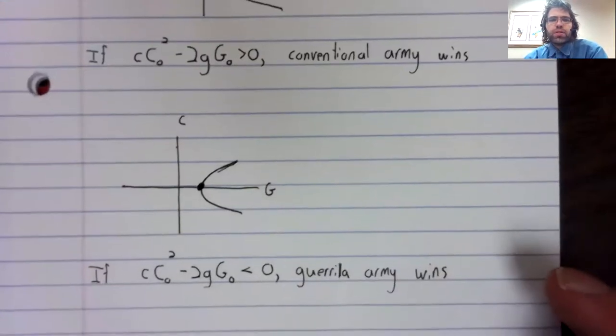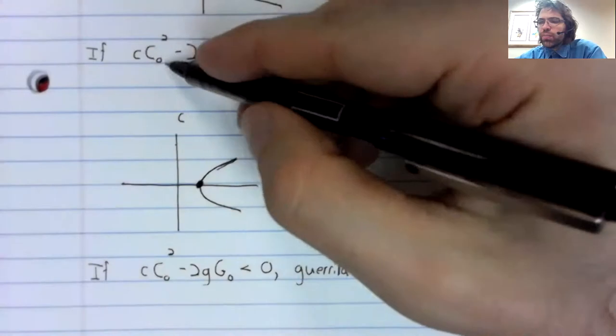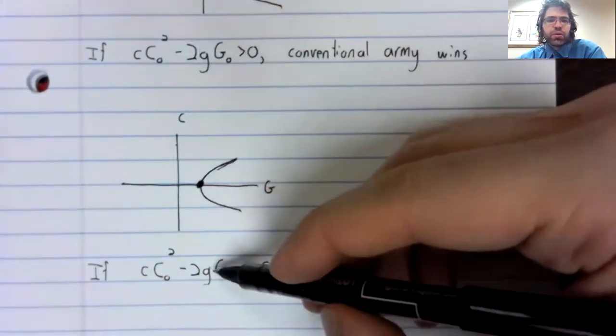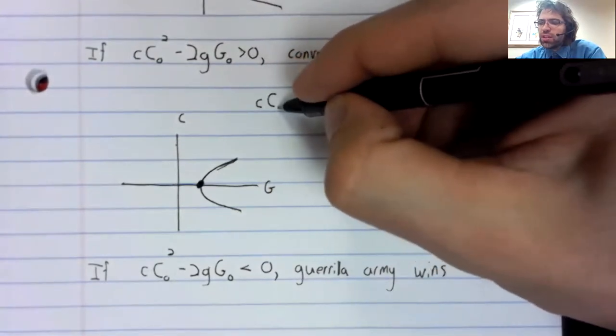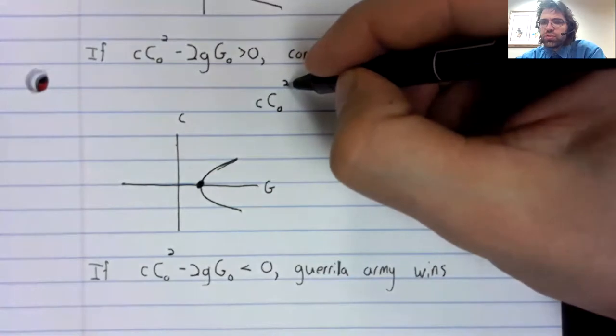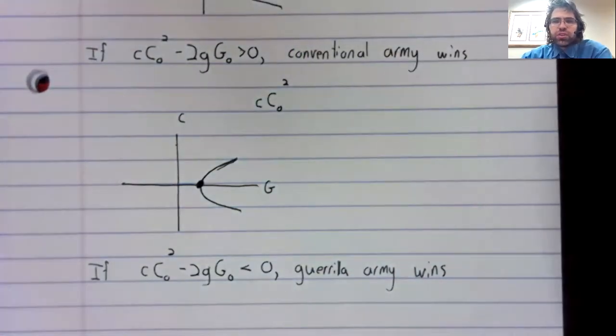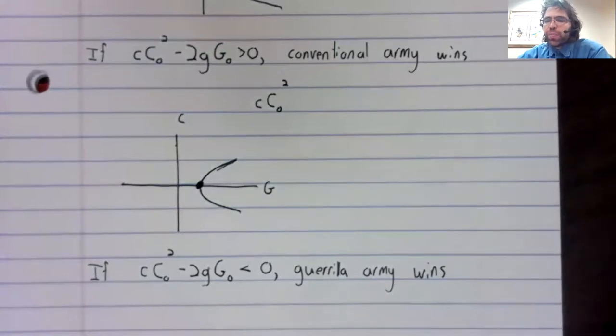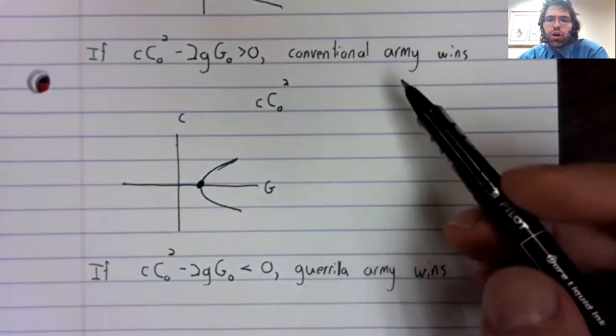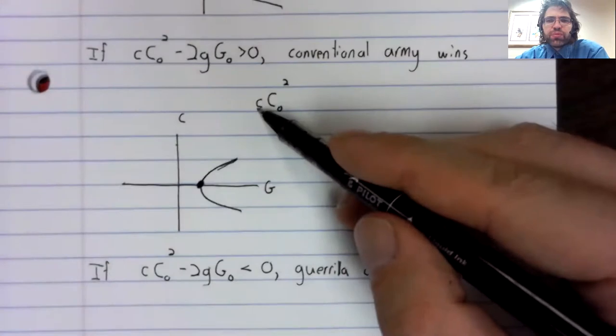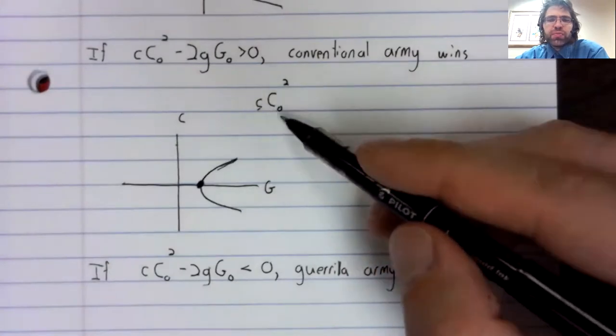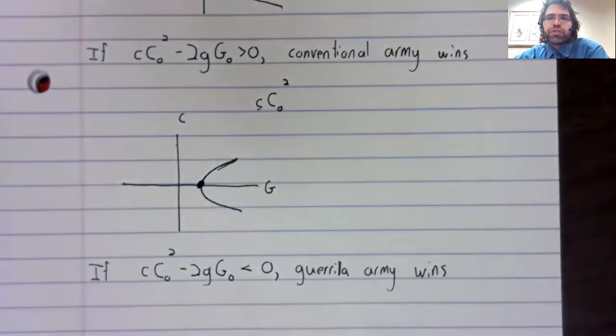Now, if we rewrite these a little by taking the negative terms over to the right. C times C, C zero squared, is clearly some kind of measurement of how strong the conventional army is. C represents its training and equipment. C sub zero represents its initial size.